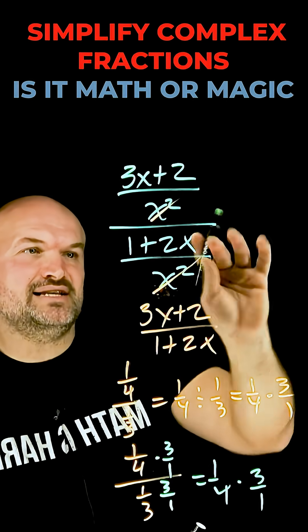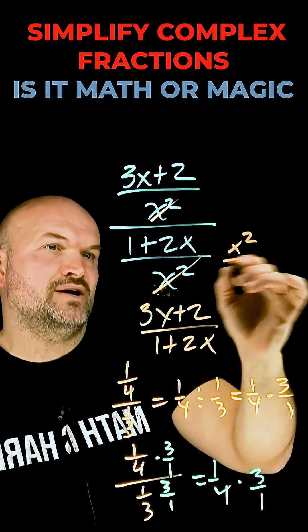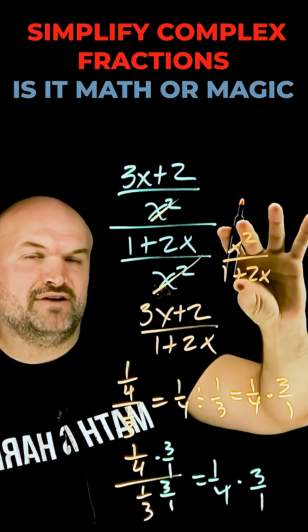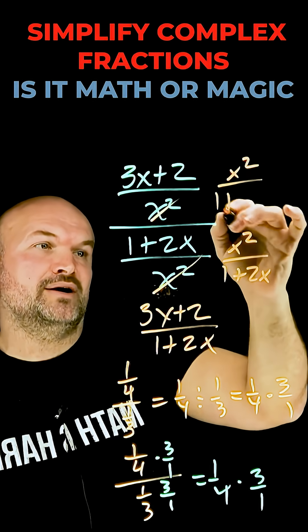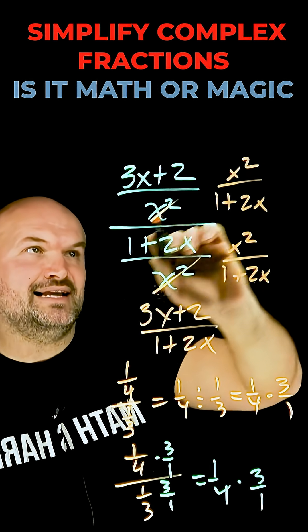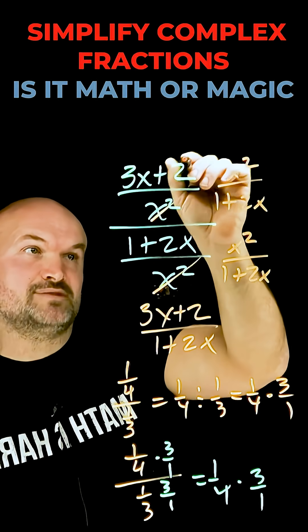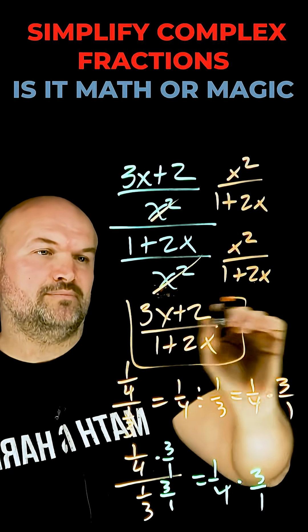So in this case, if you can see, if I multiply by this reciprocal, which is simply x squared divided by 1 plus 2x, whatever I do in my denominator, I have to make sure I do in my numerator. And what I want you to recognize here is this goes to 1 and then here the x squareds go to 1, leaving me with my final solution of 3x plus 2 divided by 1 plus 2x.